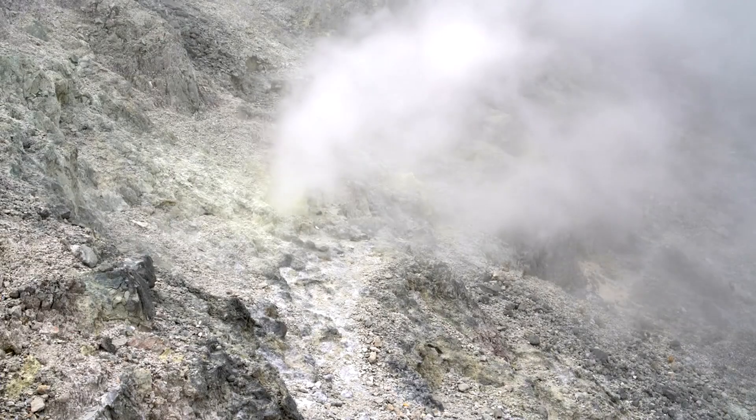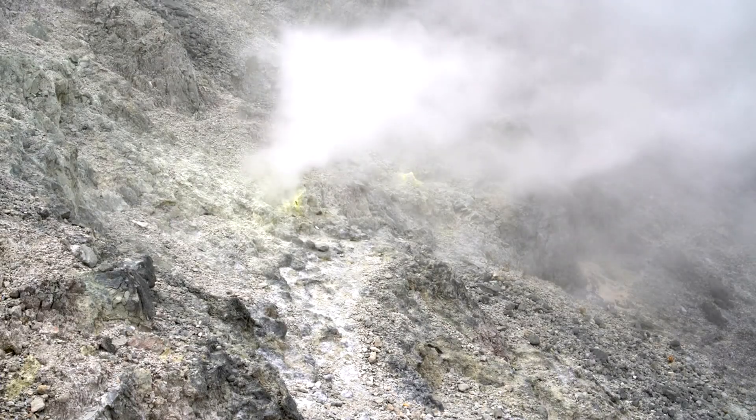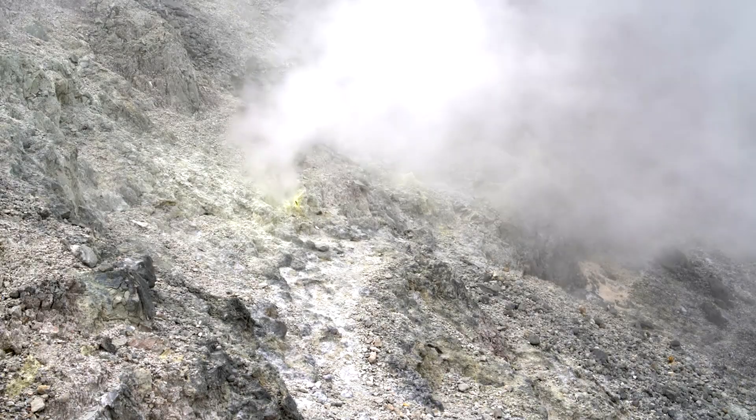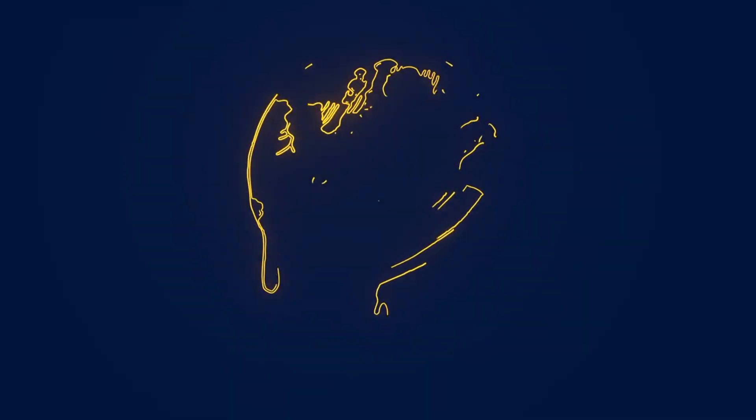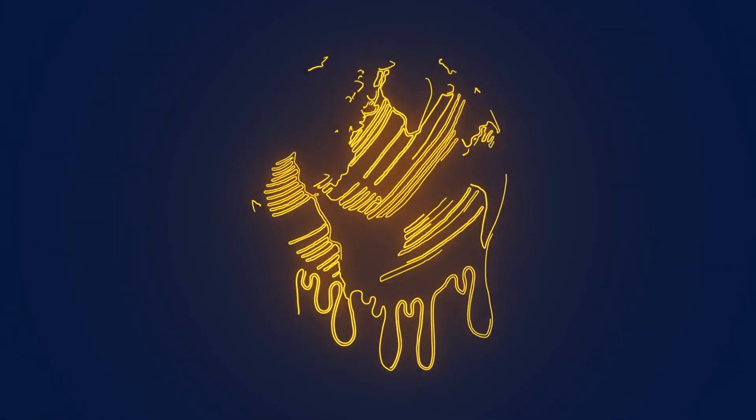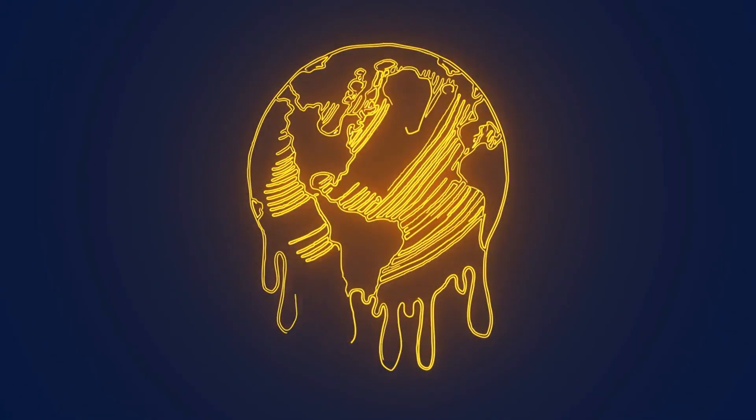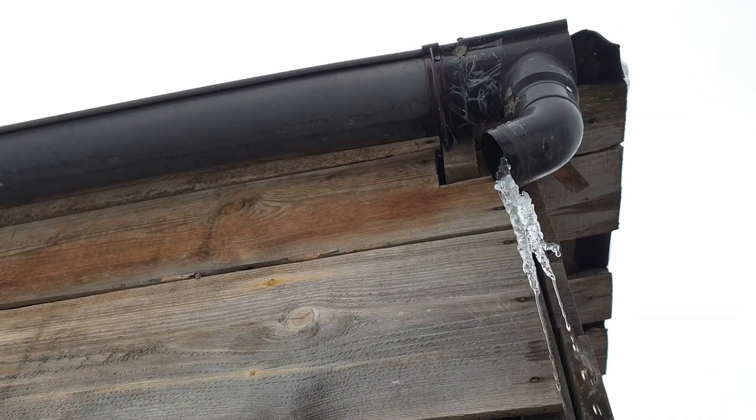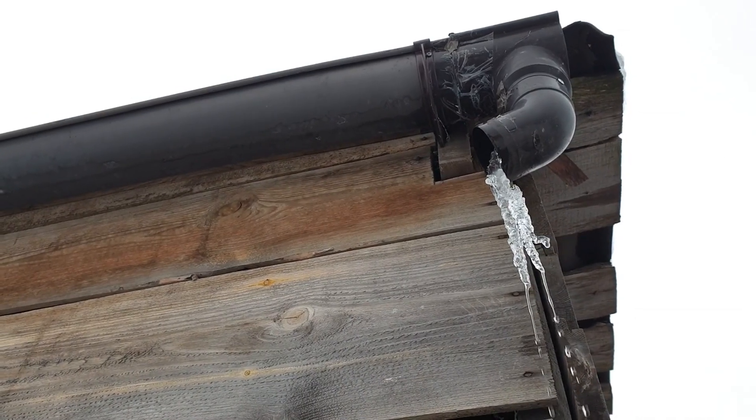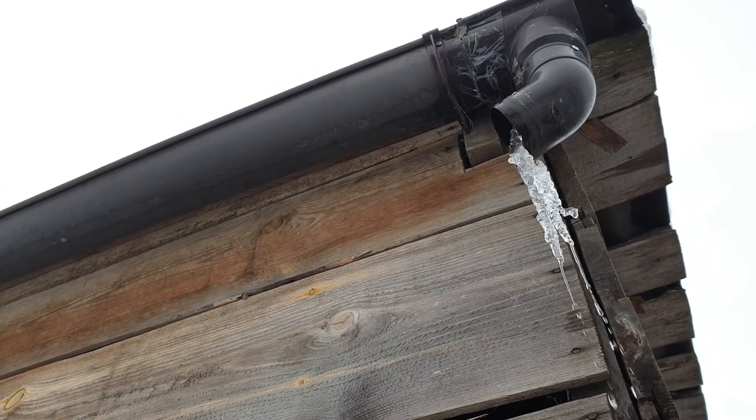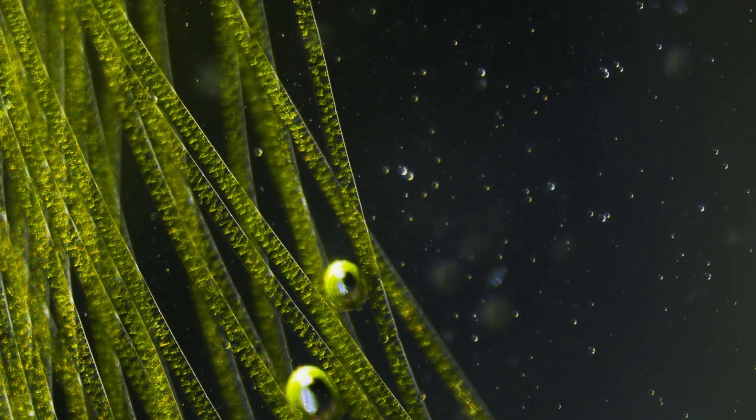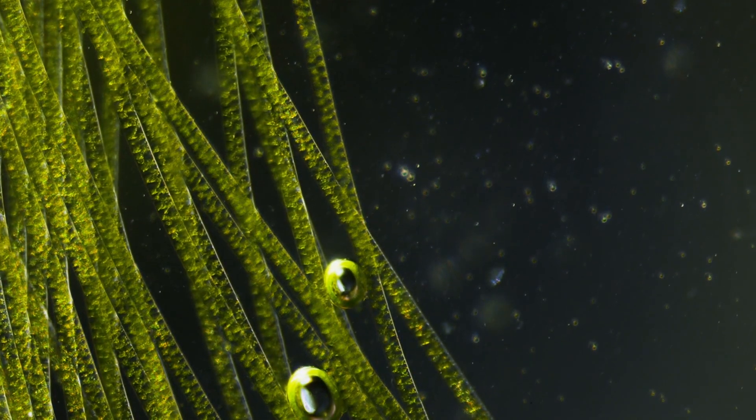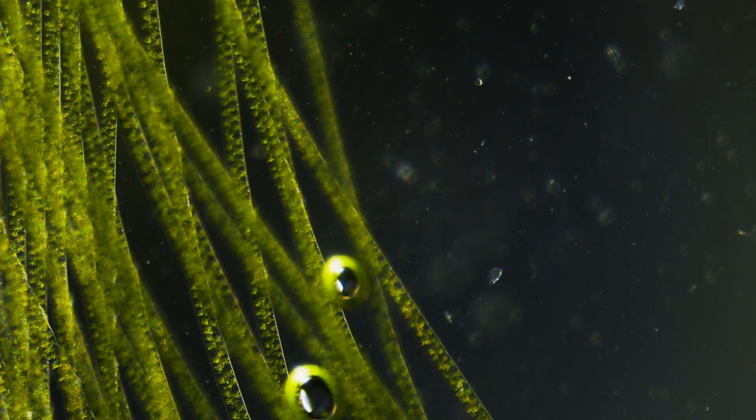The end of the Cryogenian was likely driven by volcanic outgassing, which released large amounts of CO2 into the atmosphere. This led to a greenhouse effect that eventually warmed the planet, melting the vast ice sheets. As ice retreated, nutrient-rich waters were released, leading to a surge in biological productivity. This post-glacial nutrient influx may have supported the rapid diversification of eukaryotic organisms, setting the stage for the Ediacaran biota.